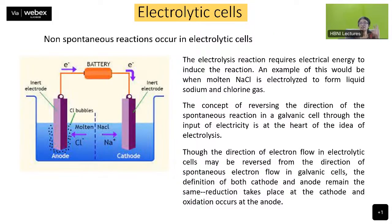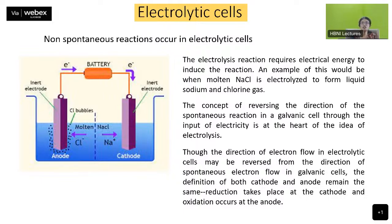Now coming to electrolytic cells. Daniel cells or galvanic cells are spontaneous, but non-spontaneous reactions also occur in electrolytic cells. The electrolysis reaction requires electrical energy to induce the reaction. An example is molten sodium chloride electrolyzed to give liquid sodium and chlorine gas. The entire concept is reversing the direction of the spontaneous reaction which occurs in a galvanic cell by the input of electricity — this is the heart of electrolysis. The direction of electron flow may be reversed from that of galvanic cells, but the definition of cathode and anode remains the same: reduction at cathode, oxidation at anode.